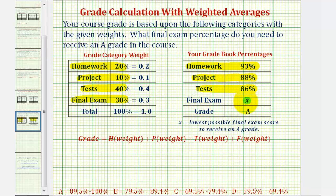And the unknown, which we'll call X, will be the final exam grade. So X will be the lowest possible final exam score to receive an A grade. So what we'll do is set up the grade using this weighted average formula and then solve for X. Before we do this, notice the lowest A is 89.5%.